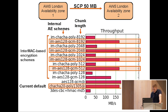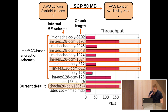The first observation is that the InterMAC encryption schemes we implemented perform at about the same level as ChaCha-Poly, which is currently the default encryption scheme in OpenSSH. A general observation is that this performance seems to be computationally dependent.